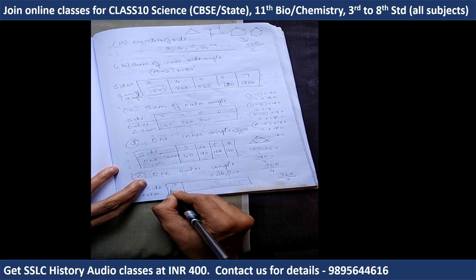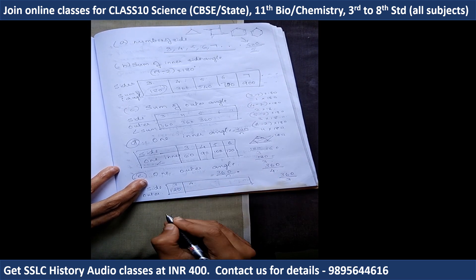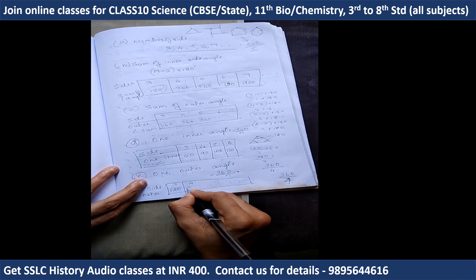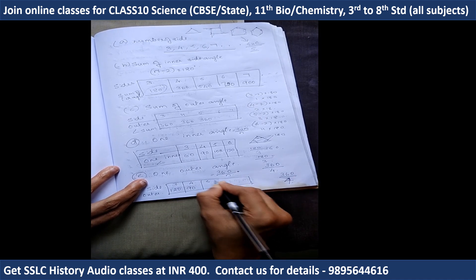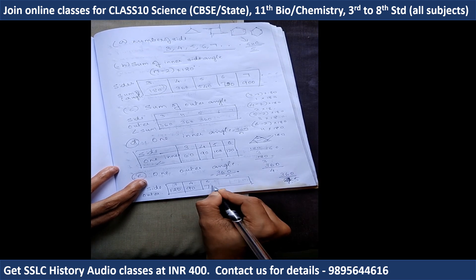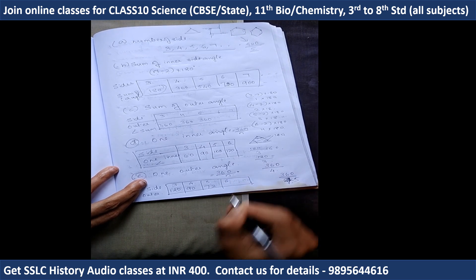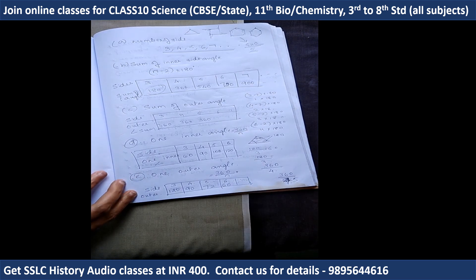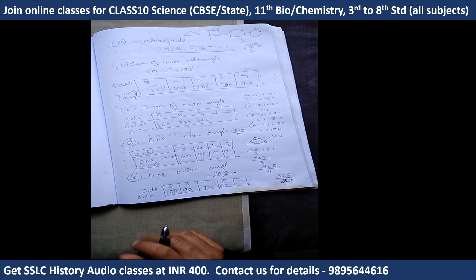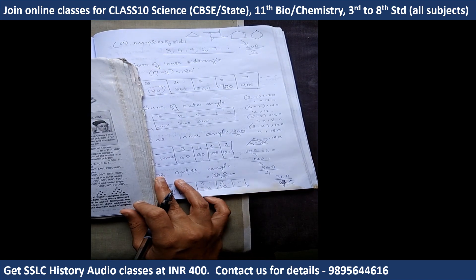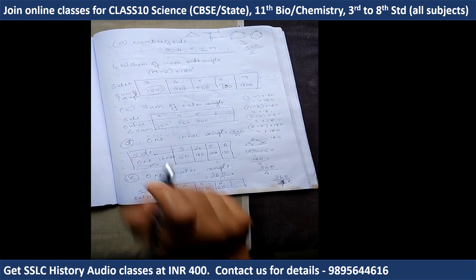360 divided by 3 equals 120. For 4 sides: 360 divided by 4 equals 90. For 5 sides: 360 divided by 5 equals 72. For 6 sides: 360 divided by 6 equals 60. For 7 sides and 8 sides: approximately 51 and 45. This is the sequence of one outer angles.